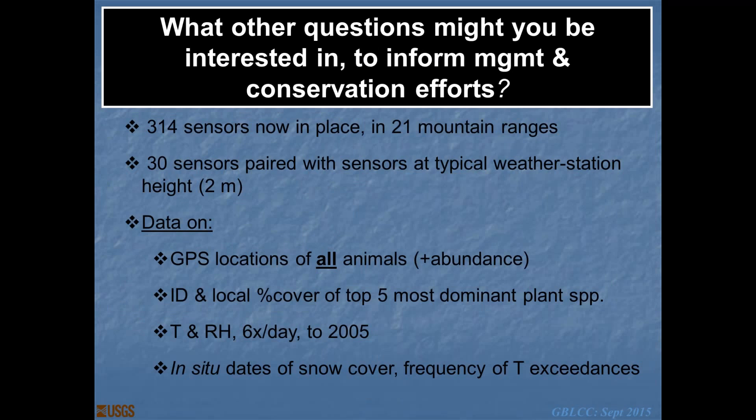There are 314 sensors distributed across 21 different mountain ranges. Thirty of those sensors are at weather station heights — two meters off the ground, shaded from direct sunlight. We also have GPS location data, WASS-enabled with three to seven meters accuracy, for all birds and mammals we encounter in our surveys, as well as abundance data. I have identification and local percent cover of dominant plant species, temperature and relative humidity measured six times per day going back as far as 2005, and in situ dates of snow cover and frequency of temperature exceedances.